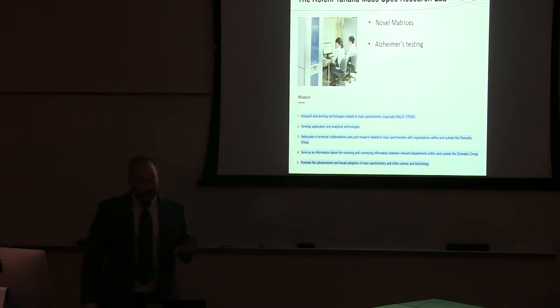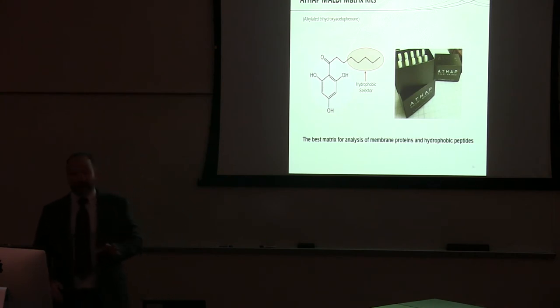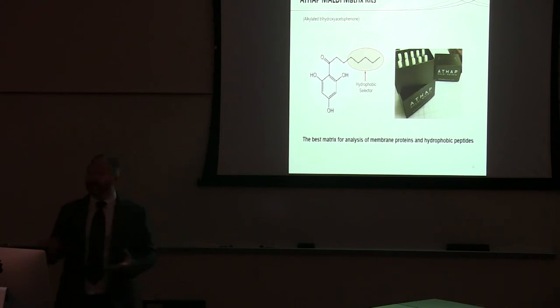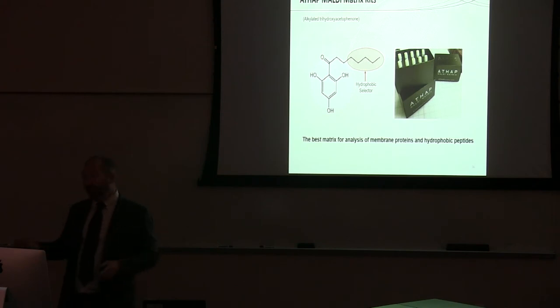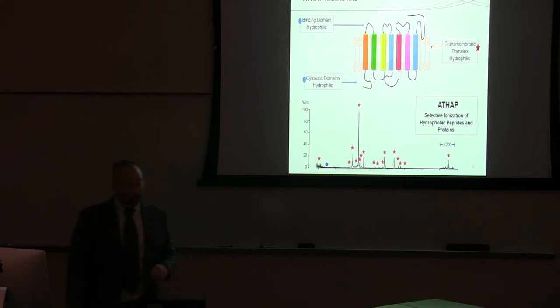So, Shimadzu, I mentioned a while ago that Koichi Tanaka won the Nobel Prize. He still works at Shimadzu, and has a mass spec research laboratory that's dedicated towards promoting life sciences, and particularly his preferred method is MALDI-TOF mass spectrometry. And there's been a couple developments that have recently come out of his lab, one of which we've commercialized, and this is the ATHAP MALDI matrix. The ATHAP matrix is a special MALDI matrix that focuses on ionization of hydrophobic species. So this could be hydrophobic proteins, like membrane proteins, or the digestive peptides from these proteins. And we're looking for new ways to use this matrix, so if you have any ideas about what you might want to try with this, we'd be happy to send you some sample matrix to just try it out on your own.